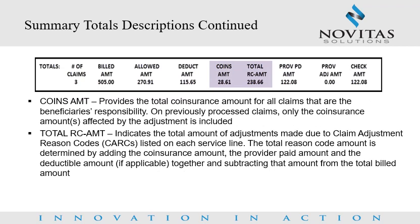The summary totals section also displays coinsurance amount, which provides the total coinsurance amount for all claims that are the beneficiary's responsibility; on previously processed claims, only the coinsurance amounts affected by the adjustment are included. Total RC amount indicates the total amount of adjustments made due to claim adjustment reason codes listed on each service line. The total reason code amount is determined by adding the coinsurance amount, the provider paid amount, and the deductible amount, if applicable, together, and subtracting that amount from the total billed amount.